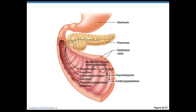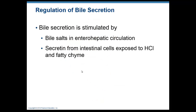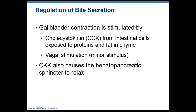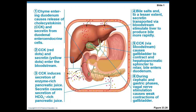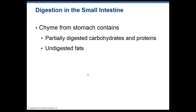The hormone cholecystokinin, or CCK — where 'chole' relates to bile and 'cysto' refers to gallbladder — stimulates the gallbladder and liver to secrete their contents into the duodenum. CCK also stimulates pancreatic enzyme release. The chyme delivered to the small intestine contains partially digested carbohydrates, proteins, and undigested fats, all broken down further in the small intestine via enzymes and bile.